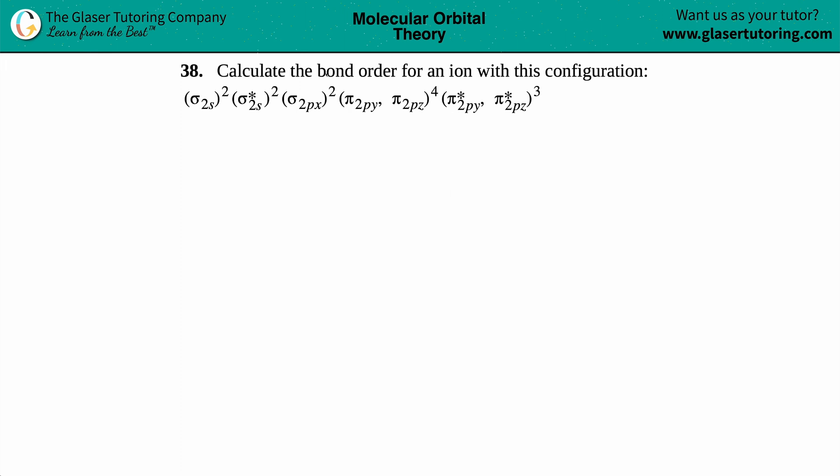Number 38: Calculate the bond order for an ion with this configuration, and then we have this whole mess. Whenever they're asking you to find a bond order, there's only one formula that comes to mind.